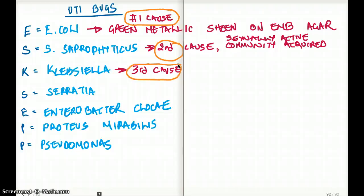Or what's the most common cause, let me rephrase that sentence, what's the cause of UTI or what's the bug that's causing the UTI that's community acquired seen in sexually active women? In that case it's going to be Staph saprophyticus. And what if I say what's the third most common cause of UTI? The third most common cause is going to be Klebsiella.